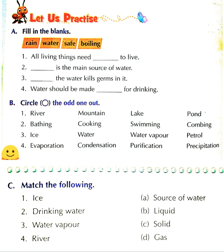First is: all living things need dash to live. How do living things live? With the help of water. So the answer is water. Second is: dash is the main source of water. What is the main source of water? Yes, rain.